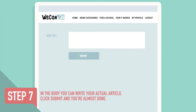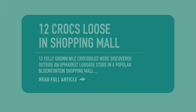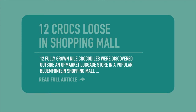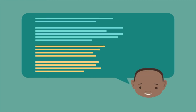Step 7: In the body, you can now write your actual article. Don't forget about using the five W's and the H. Click Submit and you're almost done. Remember to keep your stories short and punchy — 300 to 500 words is the ideal length. The first paragraph is the most important and it should immediately grab your audience's attention. Use subheadings, paragraph breaks, and bullet points to make it easier for readers to scan through your article quickly.